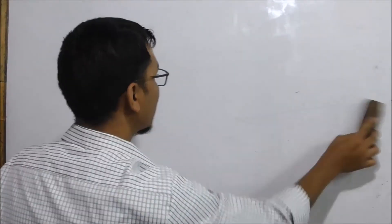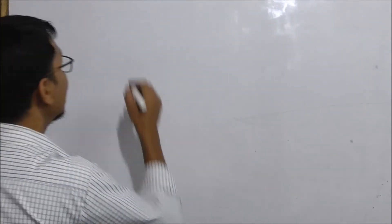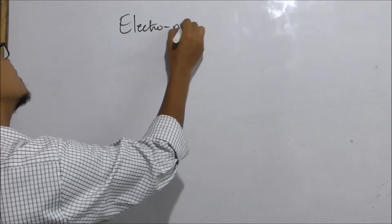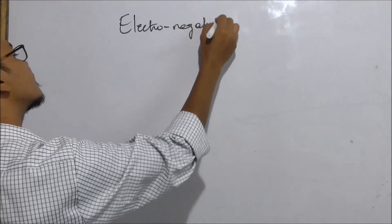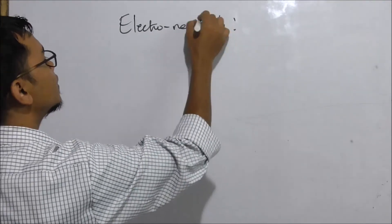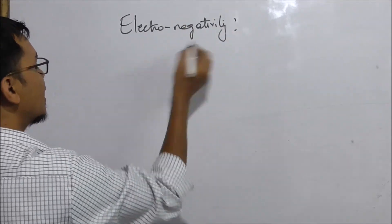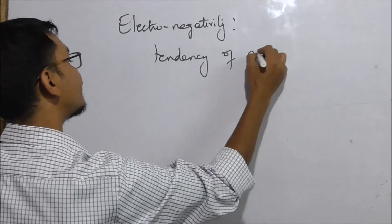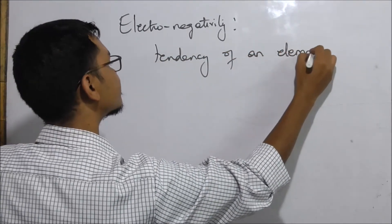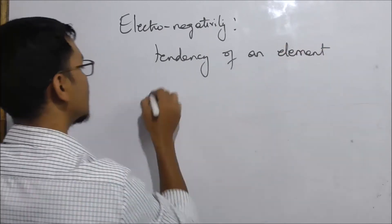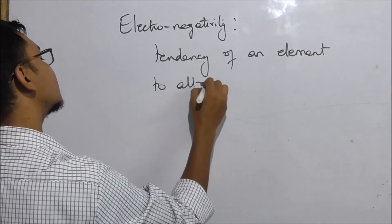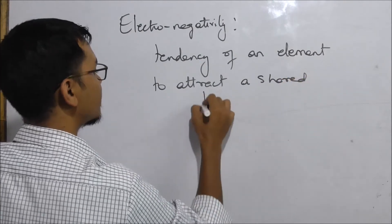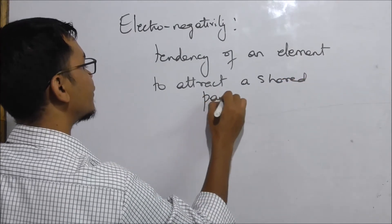Now we have to explain electronegativity. Electronegativity is the tendency of an element to attract a shared pair of electrons.